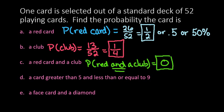So it is possible to have a zero percent probability. It's also possible to have a 100 percent probability. Like if they said what is the probability of selecting a red card or a black card, then you would have a hundred percent probability.